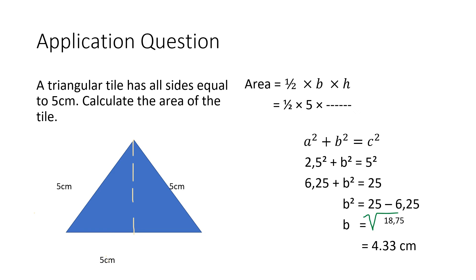Now, an application question. A triangular tile has all sides equal to 5 centimeters. Calculate the area. So I'm looking at an equilateral triangle where each side is 5 centimeters. For area, the formula is half times base times perpendicular height. The base is given, but the perpendicular height — which is attached to the 90 degree angle — is unknown. So in order to find the height, I'm going to apply the theorem of Pythagoras.